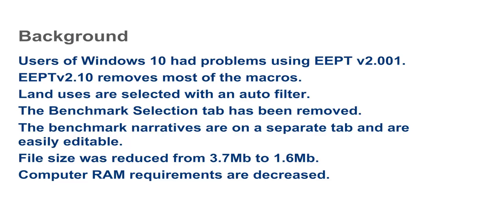First, a little background. Users of Windows 10 had problems using EEPT version 2.001, probably due to extra RAM required to run Excel 2016. This version, EEPT version 2.10, removes most of the macros. Instead of using macros, land uses are selected with an auto filter on the CPA 52 tab. The benchmark selection tab has been removed, and the narratives for benchmark conditions are on a separate tab and are easily editable. The file size was reduced from 3.7 megabytes to 1.6 megabytes, and computer RAM requirements are decreased.